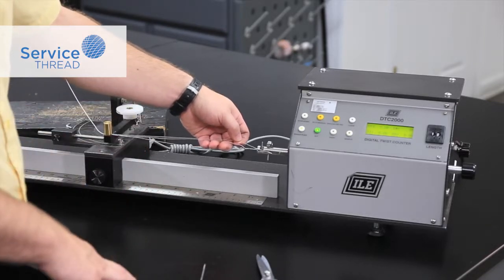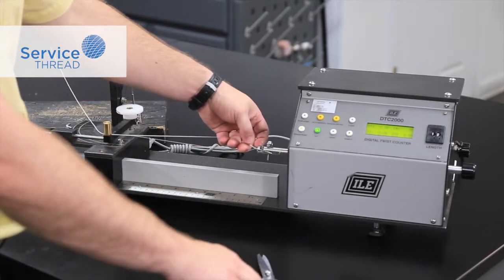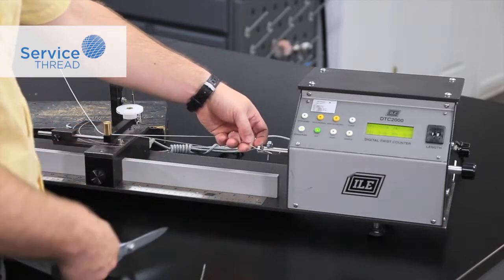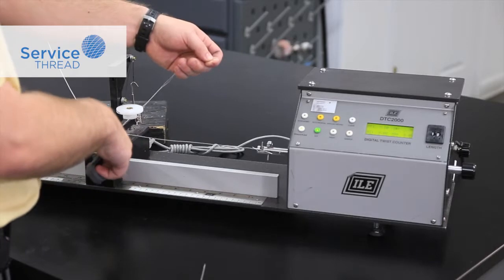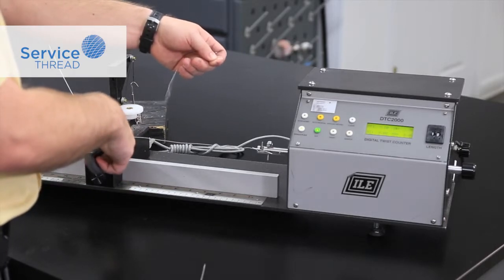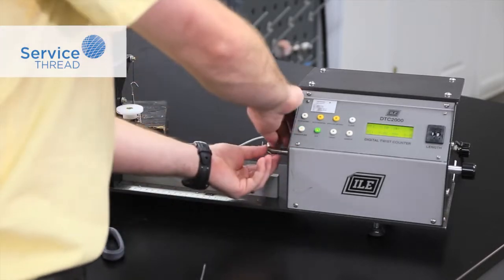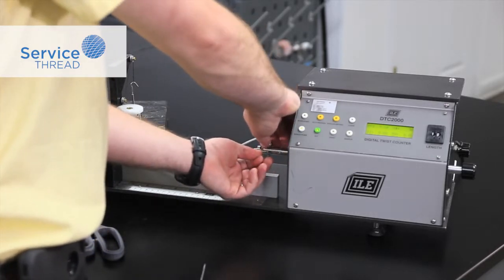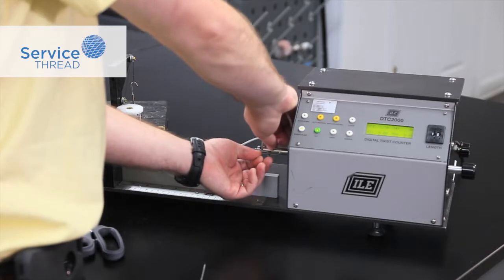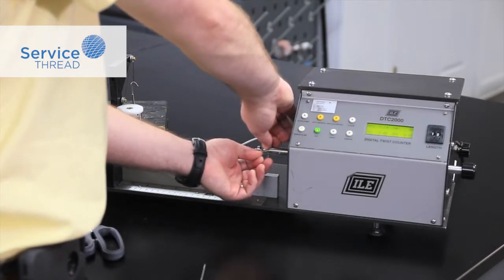To check the twist in these individual ends, after we performed the first twist test, we'll remove two of these ends. We'll take out the slack and we'll perform a second test.